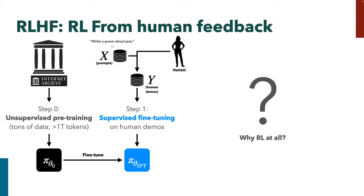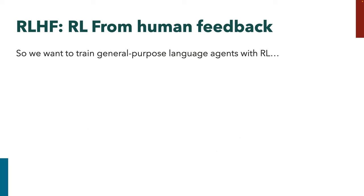The question is: what do we do next, and why not just stop at step one? There are a couple of reasons. One is that it's hard to scale annotation of human demonstrations — it's really laborious. If you want demonstrations for queries like 'write me a sassy poem in the style of Snoop Dogg about quantum mechanics,' that's going to be difficult and time-consuming. Also, if you want to exceed human performance on tasks, imitating human behavior is not likely to give you a policy that does better than humans.